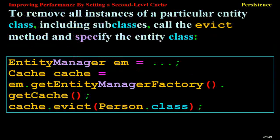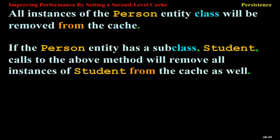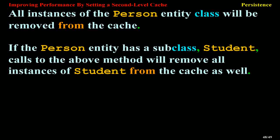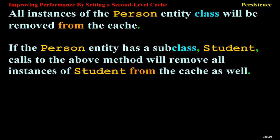To remove all instances of a particular entity class, including subclasses, call the evict method and specify the entity class: EntityManager m = ...; Cache cache = m.getEntityManagerFactory().getCache(); cache.evict(Person.class). All instances of the Person entity class will be removed from the cache. If the Person entity has a subclass Student, calls to the above method will remove all instances of Student from the cache as well.